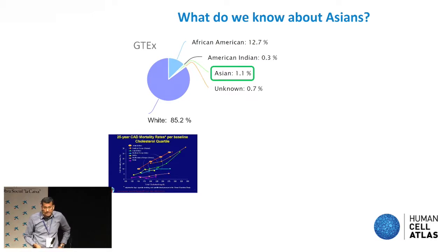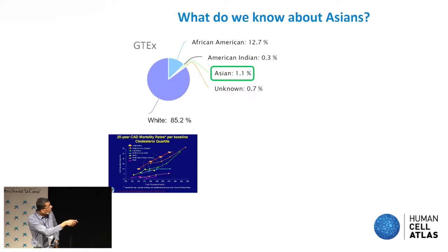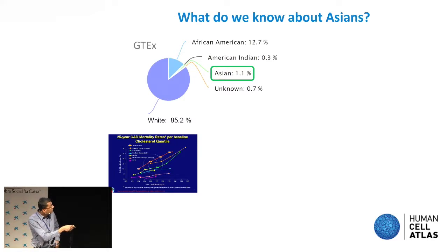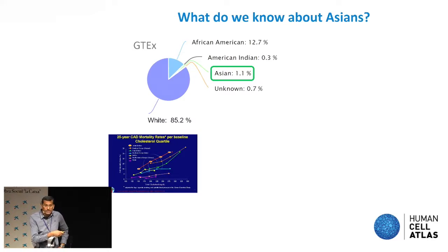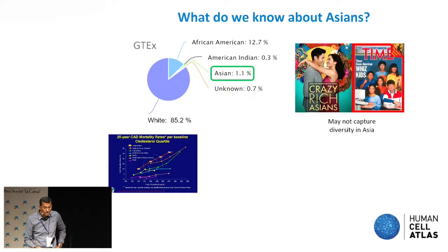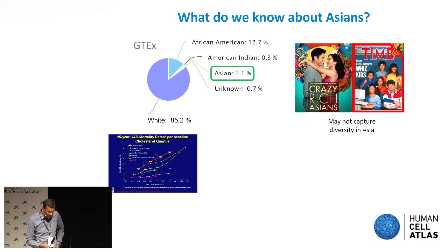What are we doing in Asia? In GTEx, there's only 1.1% Asians, and we don't even know what fraction of those are Asian-Indians who have much higher CAD risk. Moreover, these Asians were likely sampled in the West and may not be representative of the diversity of Asians worldwide. So we really need to address that.